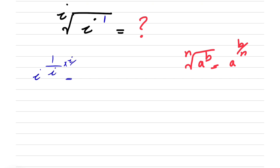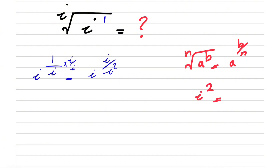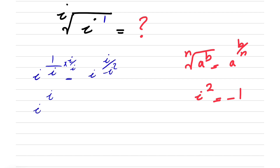So here we're going to multiply the numerator and denominator by i. So basically we'll get i over minus i squared, and we know that i squared is equal to minus 1. So here we're going to get i to the power of i over minus 1, or simply i to the power of minus i.